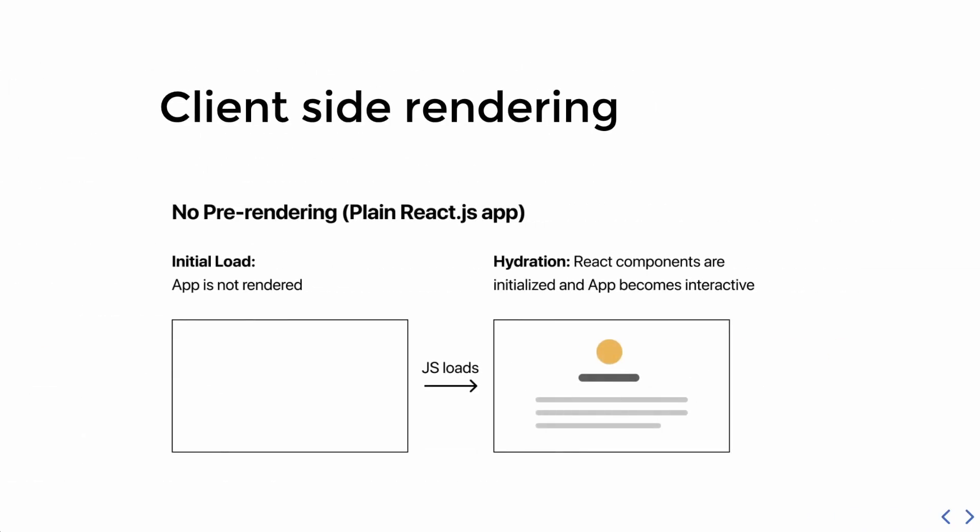The opposite of this is client-side rendering, where we send just a minimal HTML — usually just a div with an id of root — and then we also send a JavaScript bundle file that will initialize the React components and create the DOM nodes.